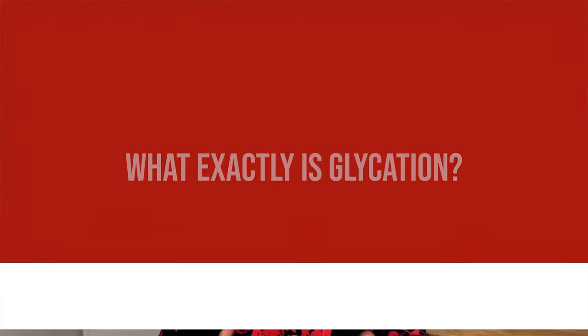What exactly is glycation? It is a non-enzymatic — meaning it happens without the help of a special enzyme — process in which proteins, amino acids and lipids bind to sugar molecules like glucose and fructose. So for example your collagen, which is a protein, binds to glucose, creating a so-called advanced glycation end product, fittingly abbreviated as AGE.